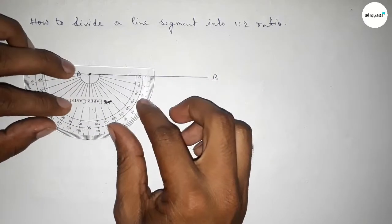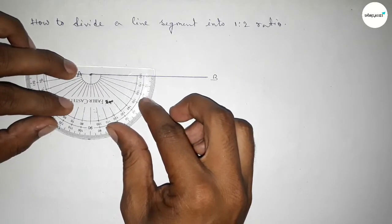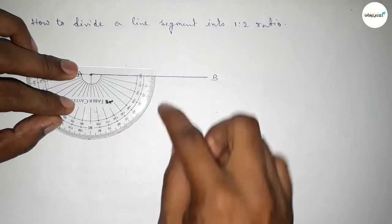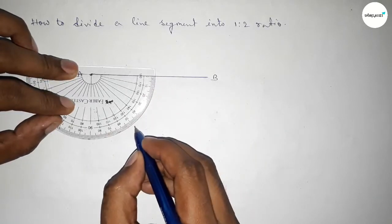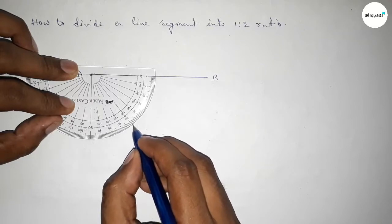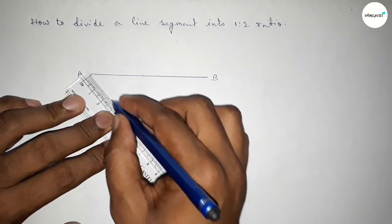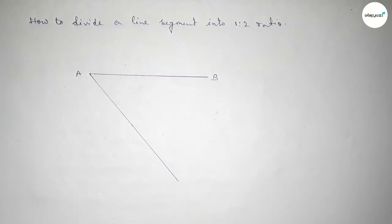Now we have to take an acute angle by using protractor, but here I am taking 50 degree angle—you can take 40 or 30. So taking here an acute angle 50 degrees. Now joining this line and taking here point X.